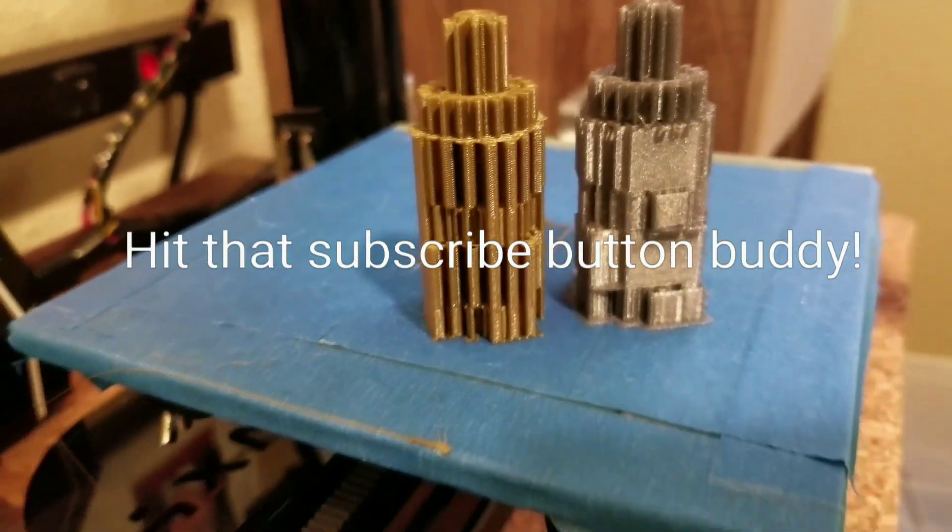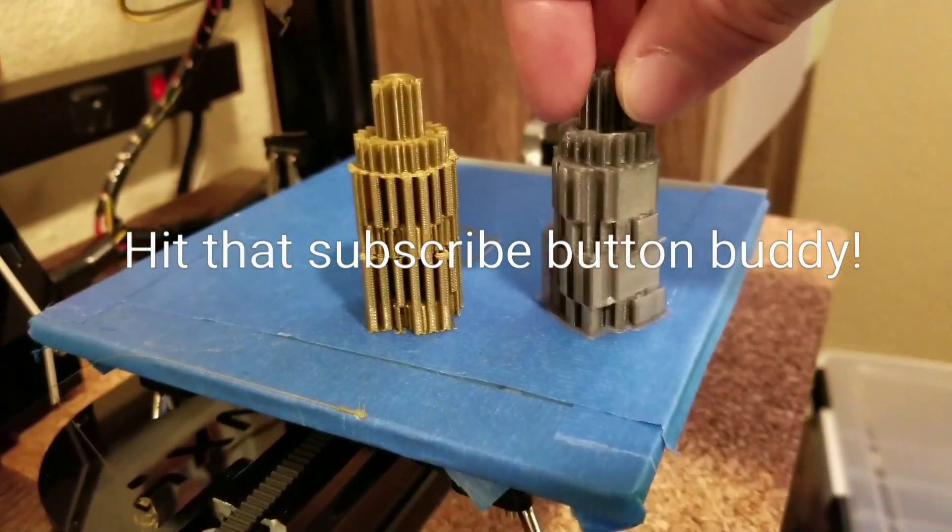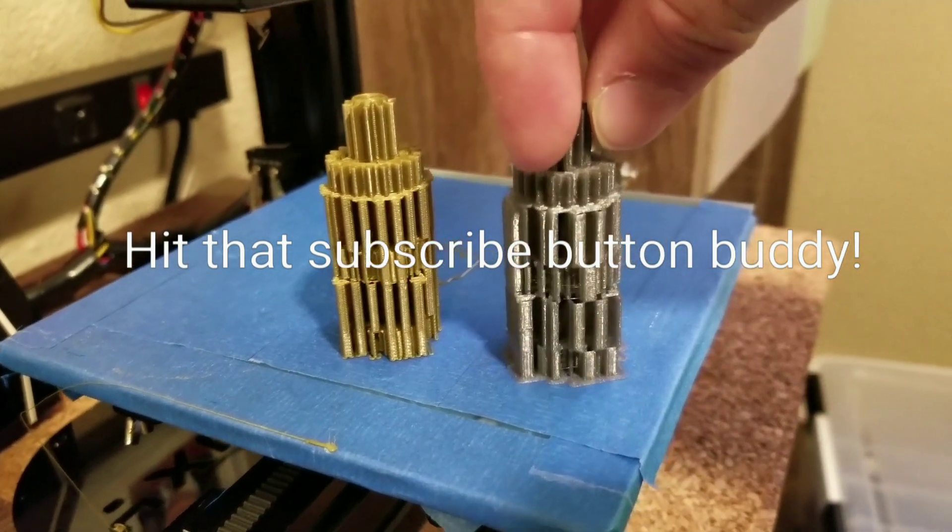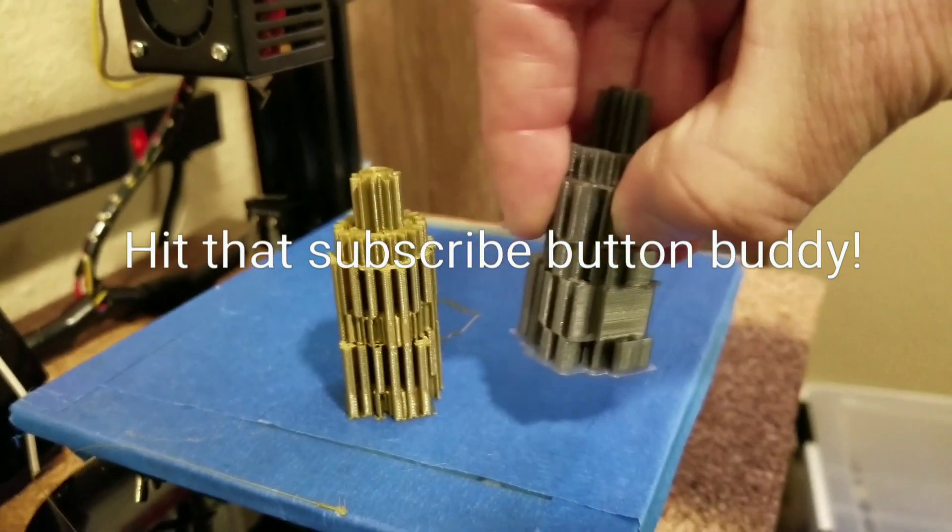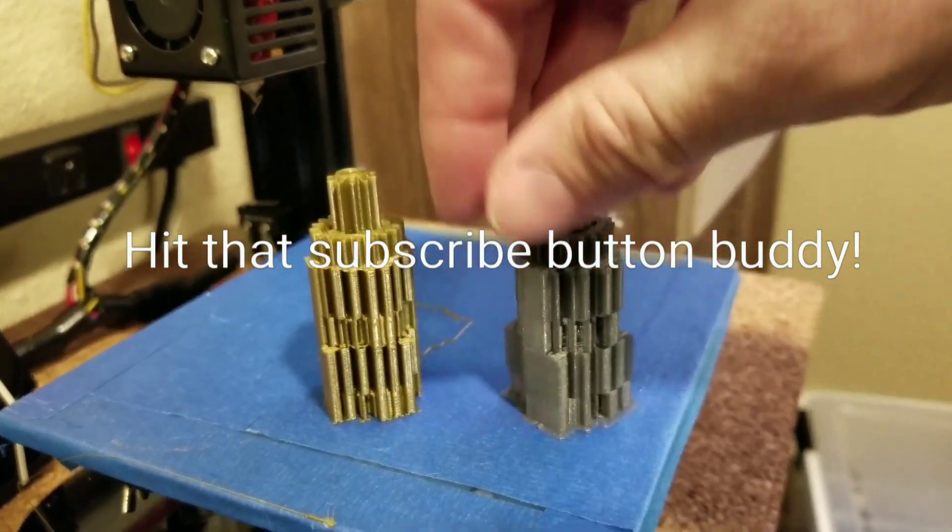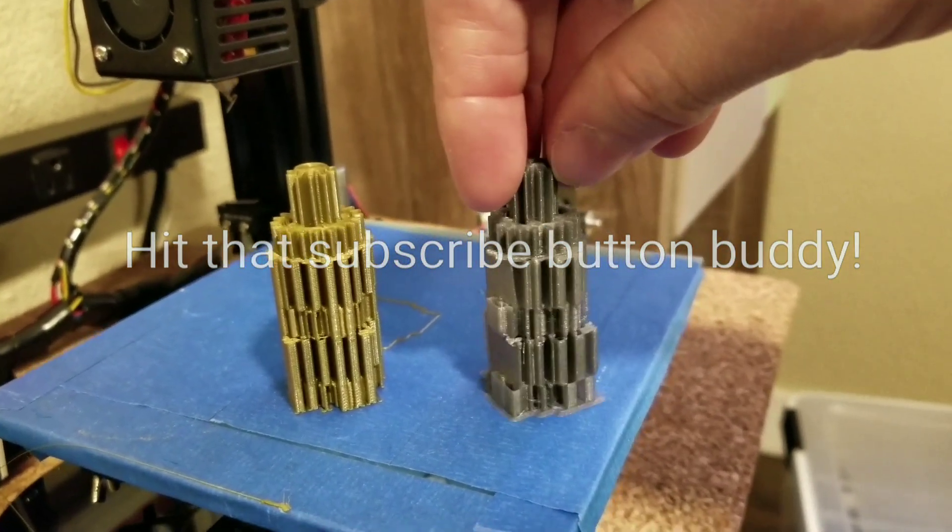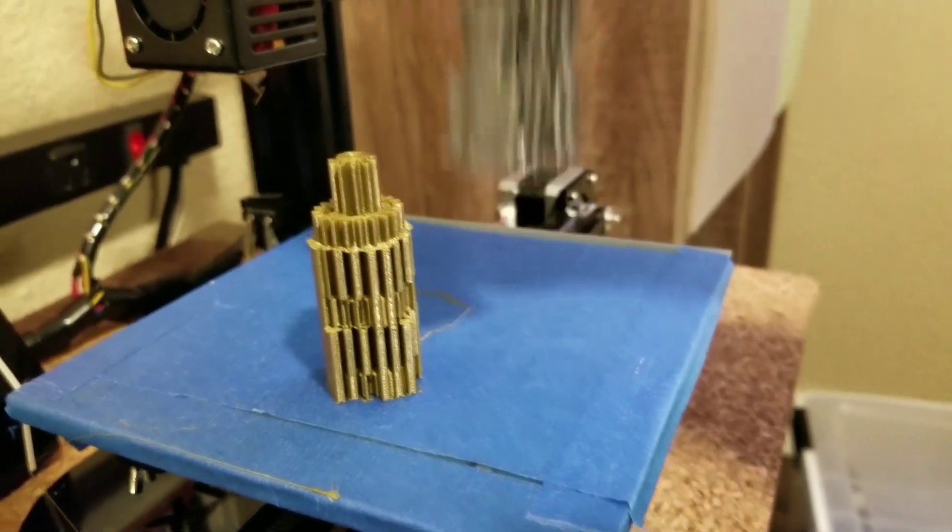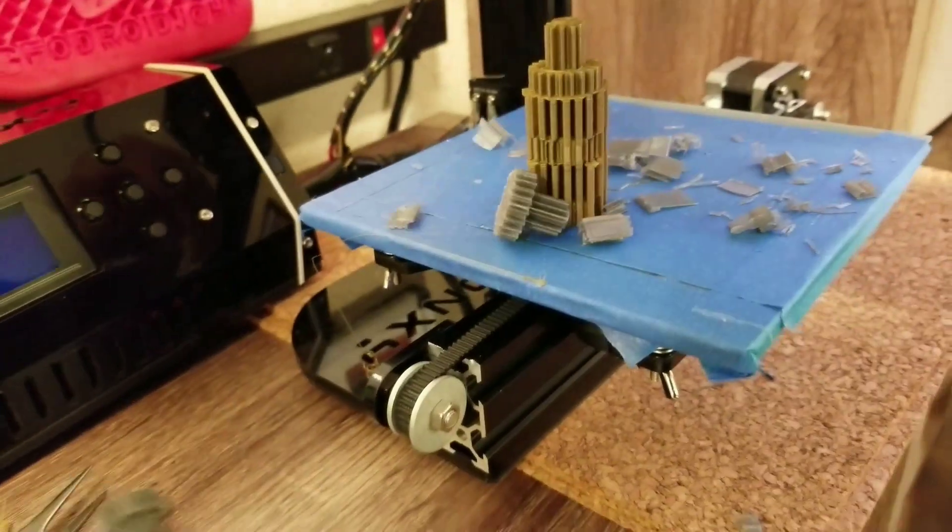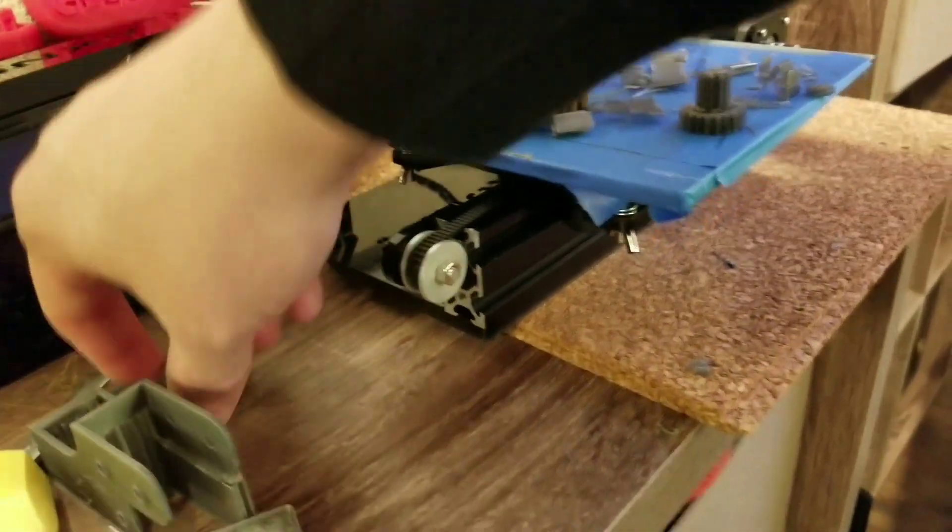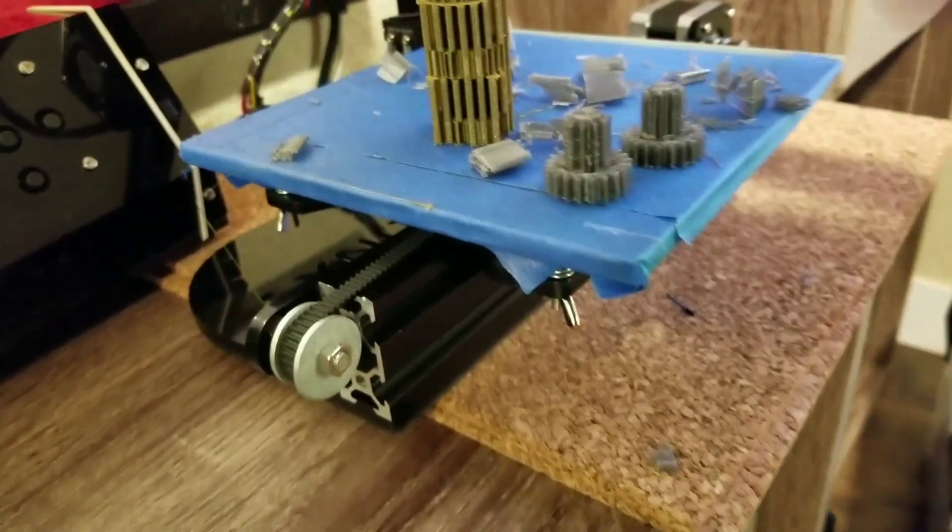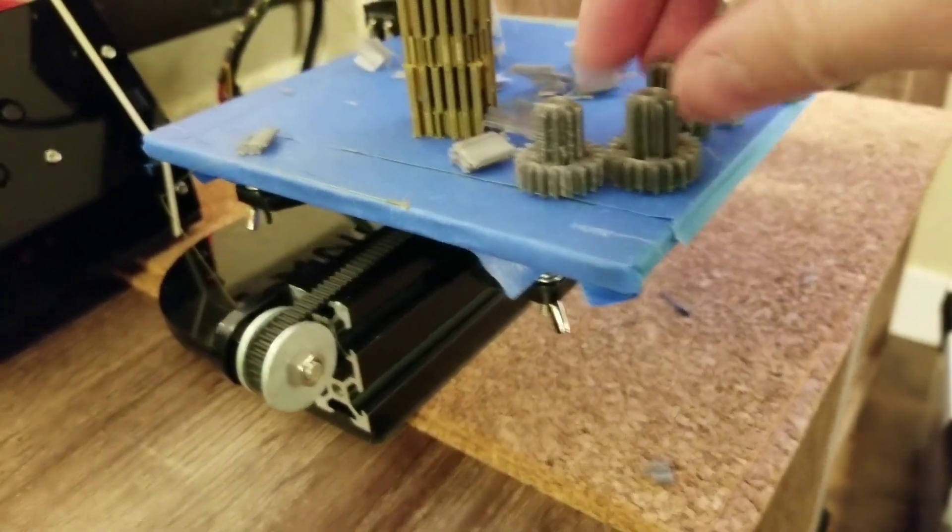So first thing we're going to do is take the one from the CR-10 and remove the support material. This part is actually really fun because the support material is really crunchy, so kids and family members all like to remove the support material. Be careful, sometimes I like to use a knife. And there we go, we have the three prints that are released from that support material.